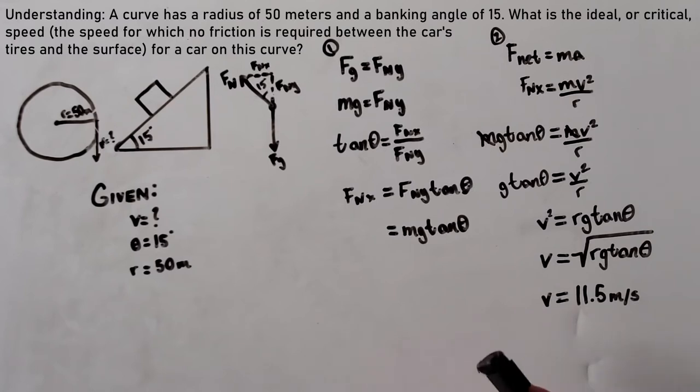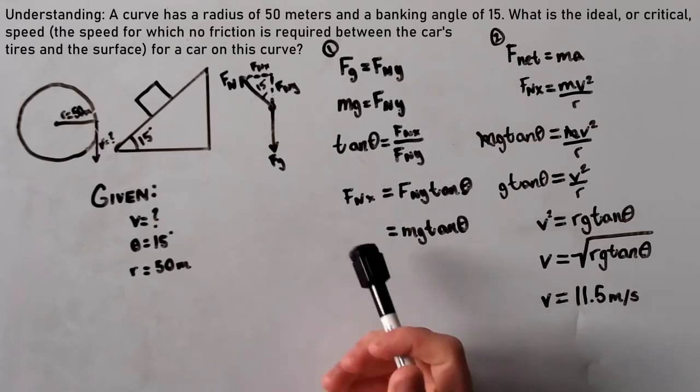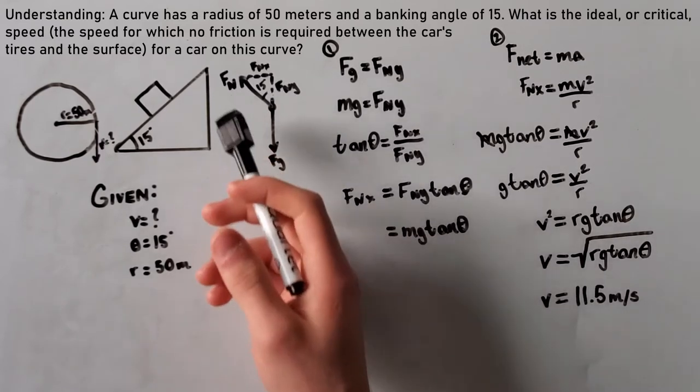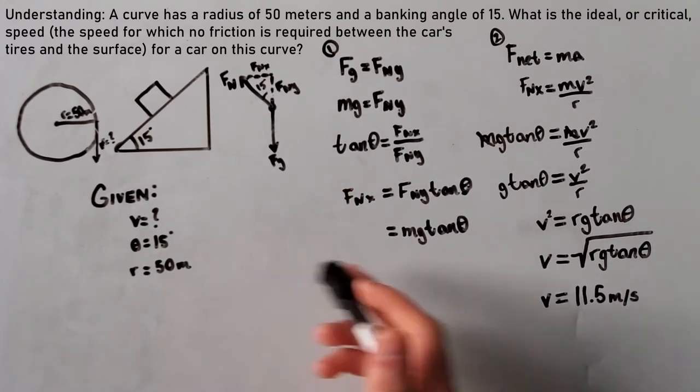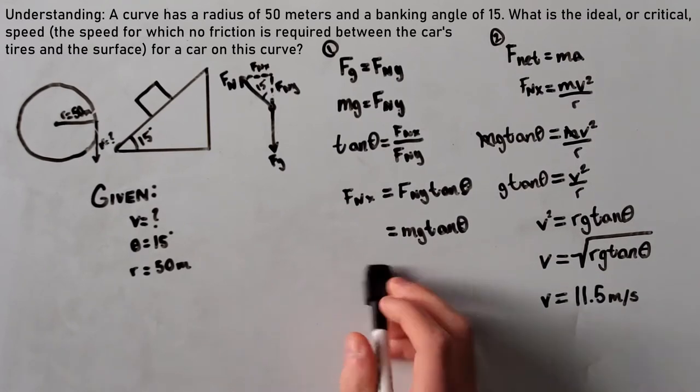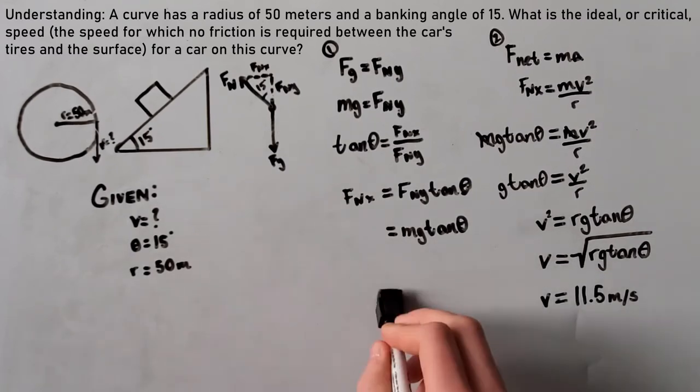The reason for this being an understanding level question is because it lets us use our knowledge of components to figure out what fnx was, and it doesn't give us all the variables at the beginning. We have to solve for them, unlike the previous question which gave us every single variable that needed to be plugged into the equation.